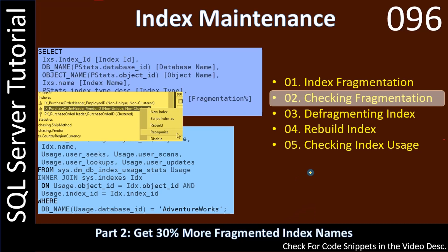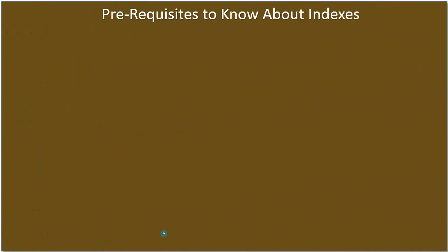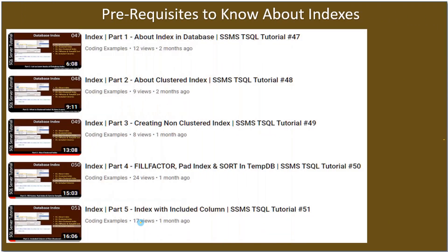Hello friends, welcome to a SQL Server tutorial. In this sub-series we are talking about index maintenance. In this specific video we will check the index fragmentation, and our goal is to get the fragmented index names — specifically indexes that are fragmented more than 30%. We already talked about index creation and clustered and non-clustered indexes, so if you want to know how to create an index you can watch the sub-series.